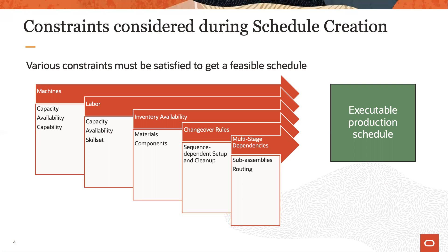Most manufacturing environments require more than just one production stage to create a product. As an example, components are fabricated, assembled, then packaged. Each of those processes may require numerous steps, all of which must be scheduled in proper order.